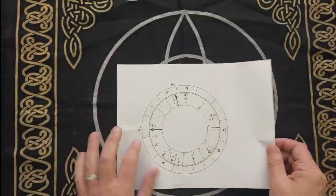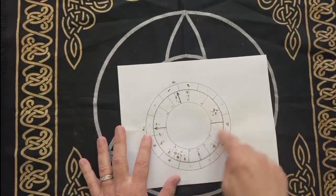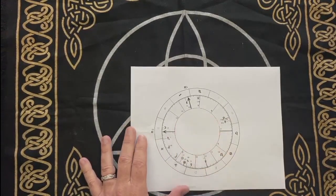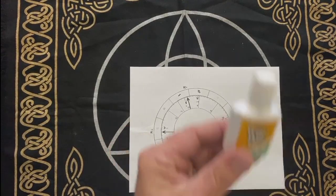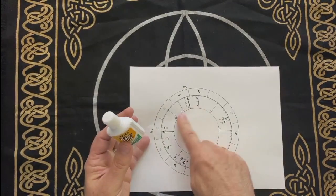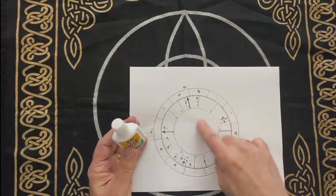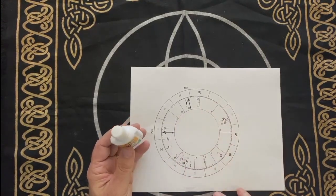Now you'll notice that a lot of times it'll have a bunch of lines and stuff in the middle called aspects. Just take some whiteout maybe like this and just whiteout all that in the middle so that you have this nice clean space in the middle and then just make another photocopy of it.